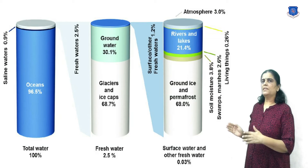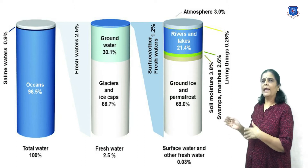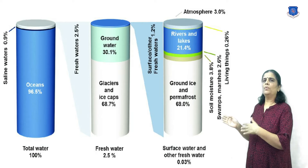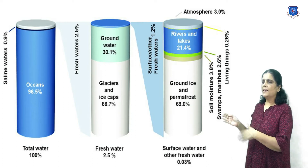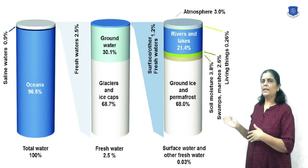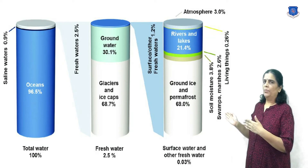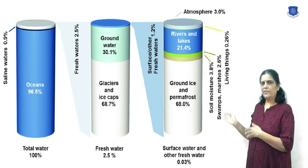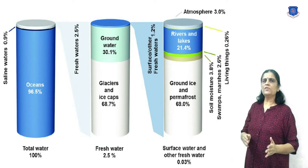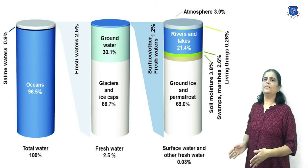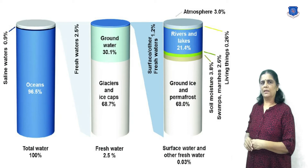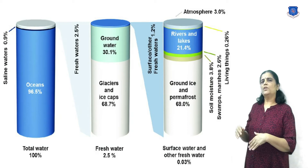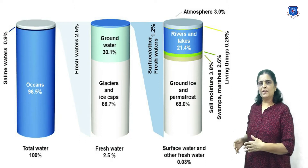Groundwater is 31% of fresh water, and slightly over two-thirds of the remainder is frozen in glaciers and polar ice caps. Surface water and other water is 0.03%. Fresh water is a renewable resource.